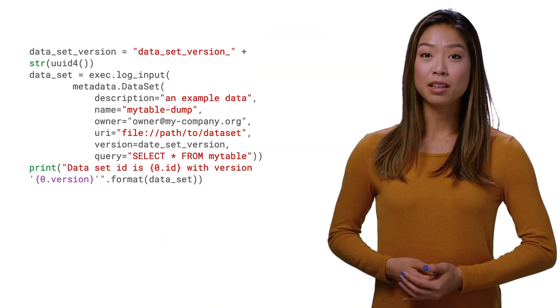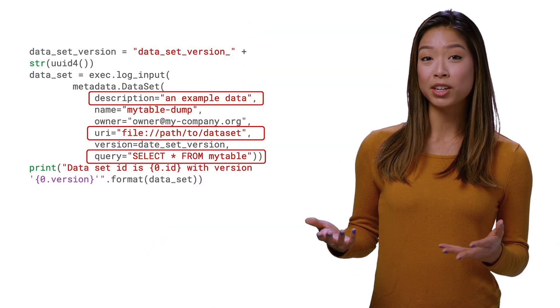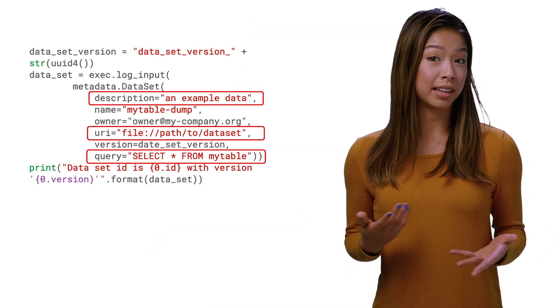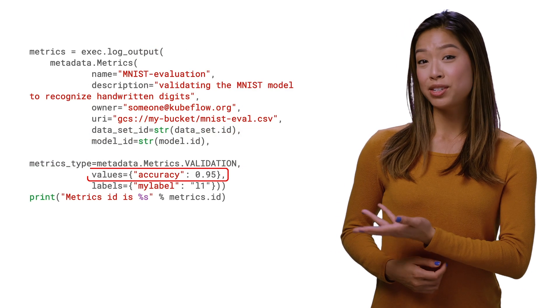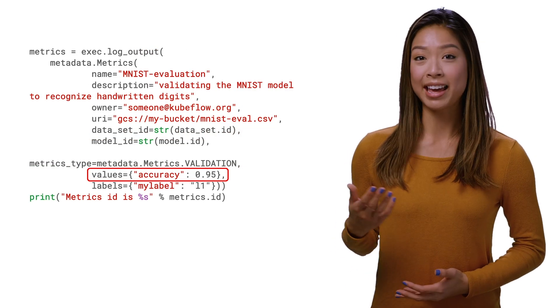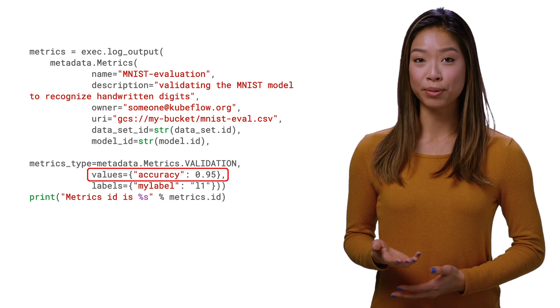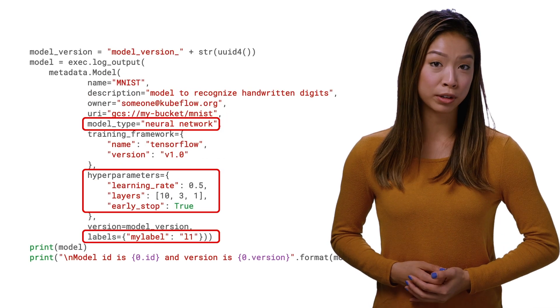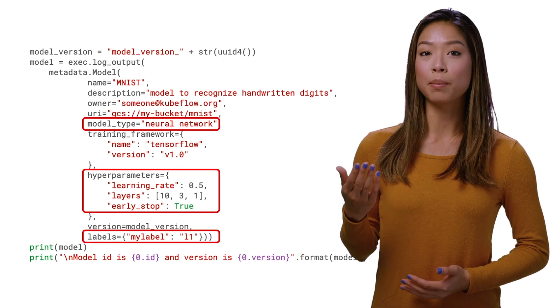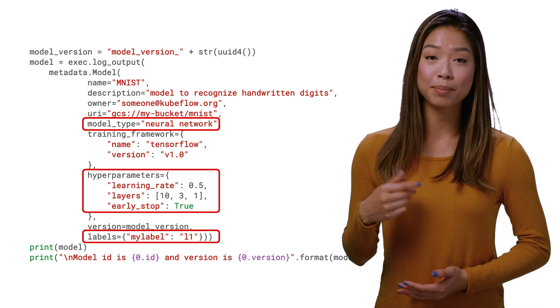In addition to KUBEFLOW pipeline's automatic tracking, you can manually write to the metadata server to collect additional metadata, like the metadata for a data set that forms inputs and outputs, like a description, path, and query, metrics used to evaluate an ML model like the accuracy and learning rate, and the metadata for an ML model that your workflow produces, like the model type, hyperparameters, and labels.